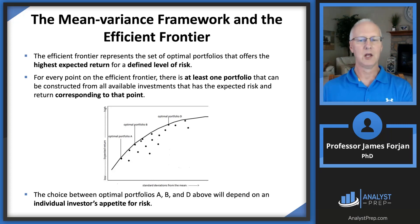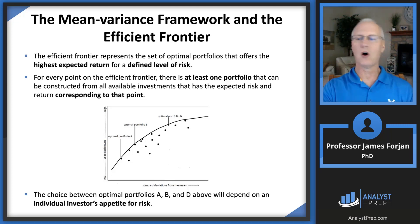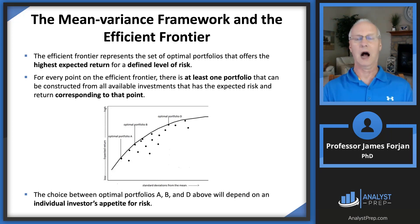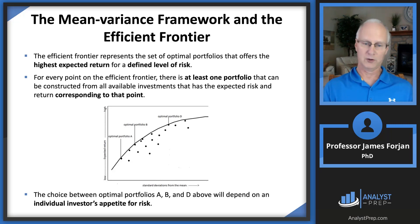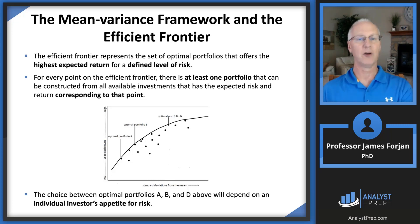Portfolios below the frontier are called inefficient. Portfolios A, B, and D all fall directly on the efficient frontier, so they are efficient. But that doesn't mean every investor is indifferent between them. To make that decision, we need the investor's indifference curves. The choice between optimal portfolios depends on the individual investor's appetite for risk — conservative investors will tend to fall around A, aggressive investors around D. But they're all efficient — that's important.